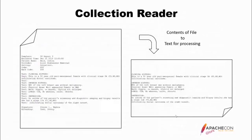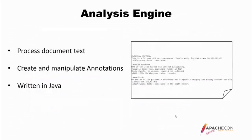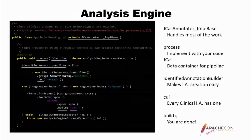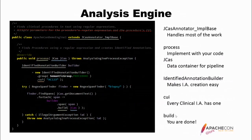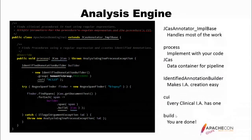So what we've done is we've taken this file and its contents and changed it into internal text for processing that we've stuck into the JCas. Next, an analysis engine — we're going to build this. It processes document text, can create and manipulate annotations, and like most things in cTAKES, it's written in Java. We're going to make a class named ApacheConDemoEngine, and this one extends JCasAnnotatorImplBase. Just like the AbstractFileTreeReader, this class in cTAKES is going to do a lot of the work for us. We only need to implement one method named 'process,' which is given the JCas.